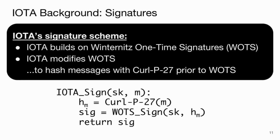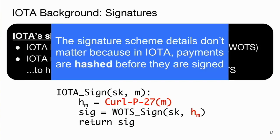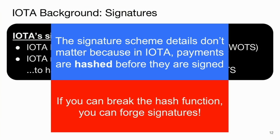Signatures in IOTA are actually kind of interesting. IOTA uses a signature scheme called Winternitz one-time signatures. IOTA modifies Winternitz, however, so that signatures are not on the message itself but actually on the hash of the message. What's really important to note in this code is that before signing happens, you use a hash function — in this case called Curl-P27, meaning it's run for 27 rounds. This is IOTA's custom hash function. Because the signature is done on the hash of the message, it doesn't really matter exactly how the signature scheme works, because the security of the signature scheme reduces to the hash function. If you can break the hash function, you can forge signatures. And that's exactly what we do to conduct our attack.